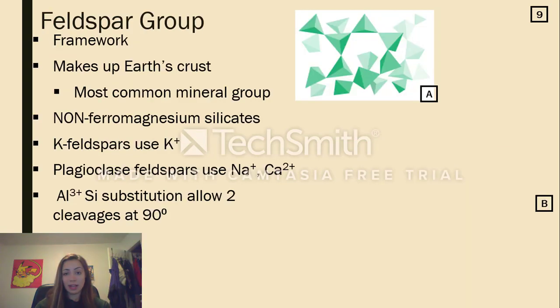And the last but most important silicate group that we'll discuss are the feldspars. Feldspar minerals have that three-dimensional complex framework tetrahedron structure. They're responsible for a majority of Earth's crust. So it makes sense that they are the most common silicate group found on Earth, as well as the most overall common mineral group.